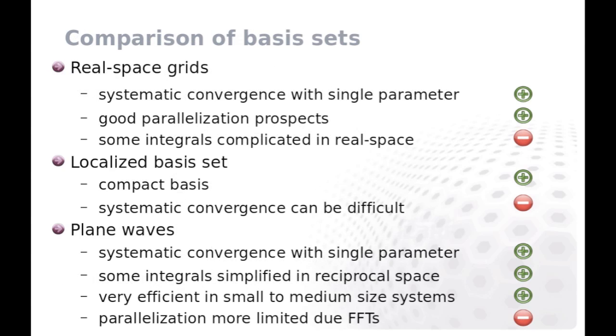We end the general overview about the GPAW code by summarizing the different basis sets. Both real-space grid and plane waves allow systematic convergence with a single parameter, that is grid spacing and the plane wave cutoff, while with localized atomic orbitals systematic convergence is less straightforward.